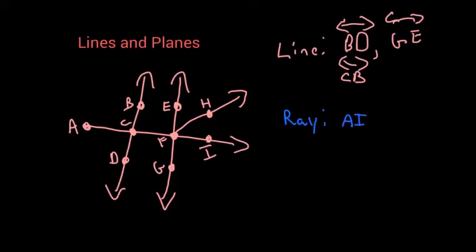So we have one endpoint at A and then it goes on through I forever. Here it does matter which letter comes first, so whatever point you start at has to come before the point that goes through the line with arrow. So another ray would be ray FH—it starts at F, travels through H, and goes on forever after H.